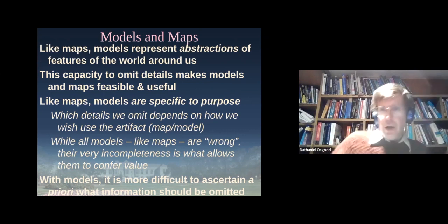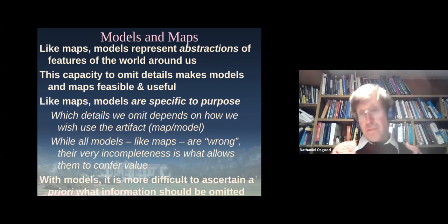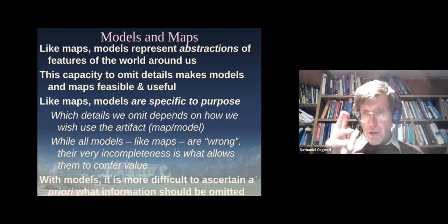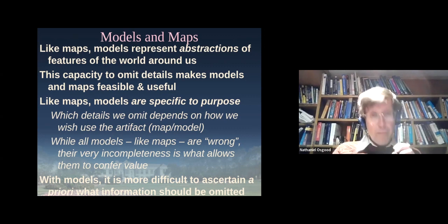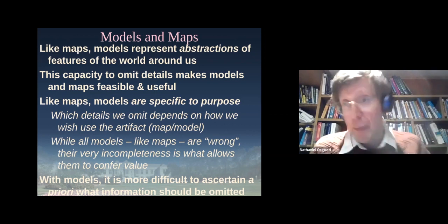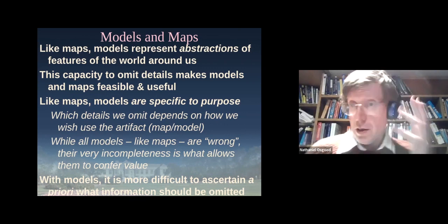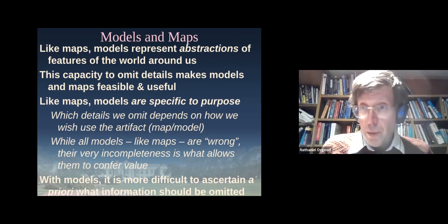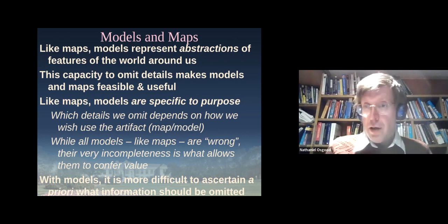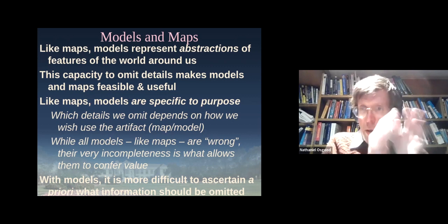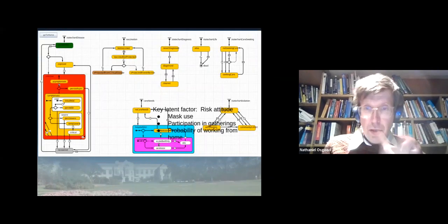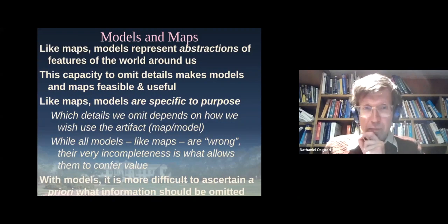I'd like to introduce another analogy here. Models are like maps. Models represent simplifications of the world, just like a map does. It's the very fact that the model omits some details of the world that makes it feasible to use — it doesn't have to characterize every single characteristic of every person in the province. It's the ability to omit details, to zero in on the key details, to boil it down to a comparatively small number of things — that's what allows these models to secure greater impact.